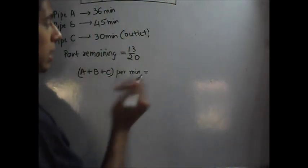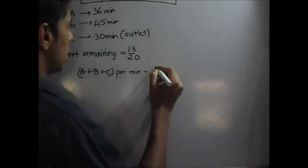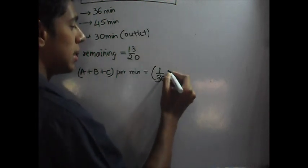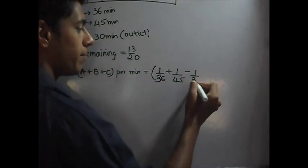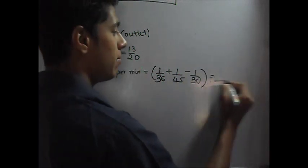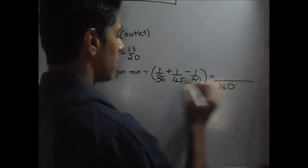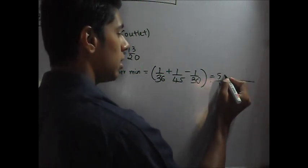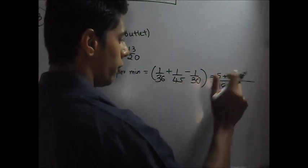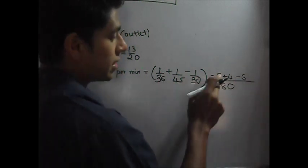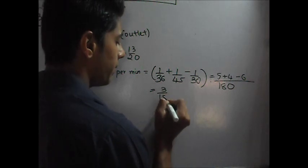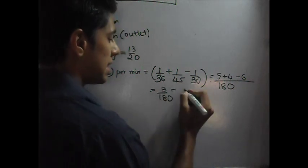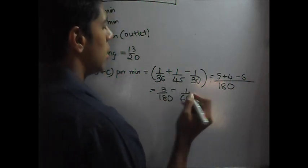Now, let's write the per minute equation. It comes out to be 1 over 36 plus 1 over 45, both are inlet pipes, minus 1 over 30. So, this is an outlet pipe. Now, let's take an LCM. It comes out to be 180. 36 into 5 plus 45 into 4 minus 6. So, this is 5 plus 4 is 9. 9 minus 6 is 3. So, this comes out to be 3 upon 180. 3 60s are 180. So, 1 over 60.